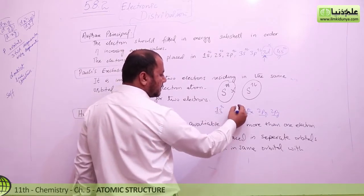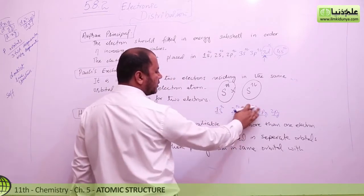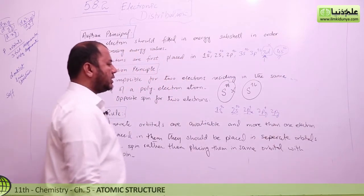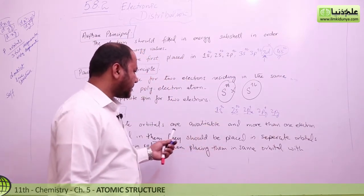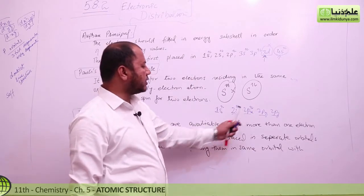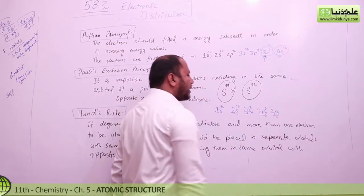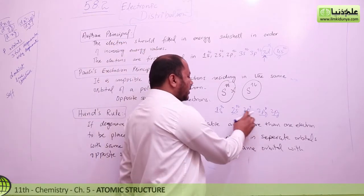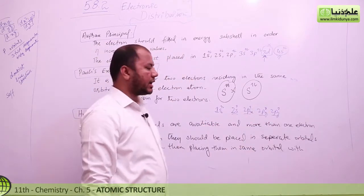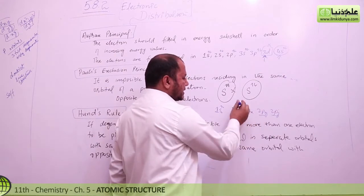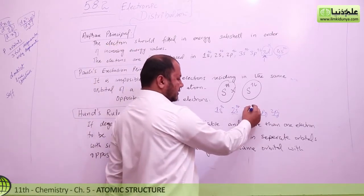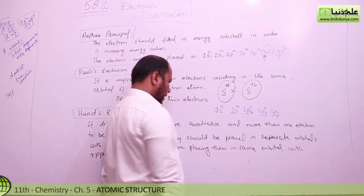Now here we have electrons — two electrons in this orbital, two electrons in this, and one electron in each of these. In the same orbital, two electrons showing the same spin would violate the rules. If you put electrons in a configuration where they share the same spin in the same orbital, that configuration will not be found. Same-spin electrons must be in different orbitals.